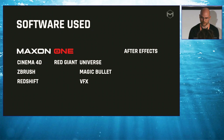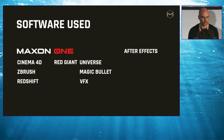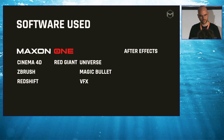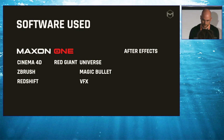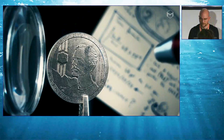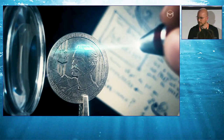The shot you just saw is one of the two shots I want to talk about today. From the Maxon One side, I used Cinema 4D, ZBrush, and Redshift. Then After Effects together with Red Giant Suite, Universe, Magic Bullet, and VFX — that's everything I needed for these shots. Now let's have a look at them.